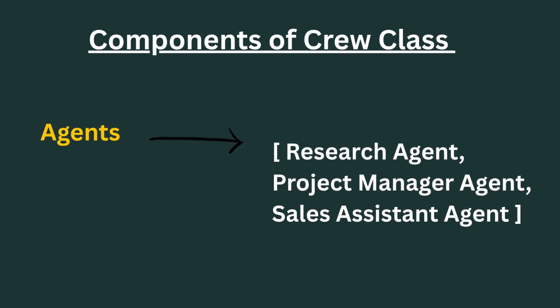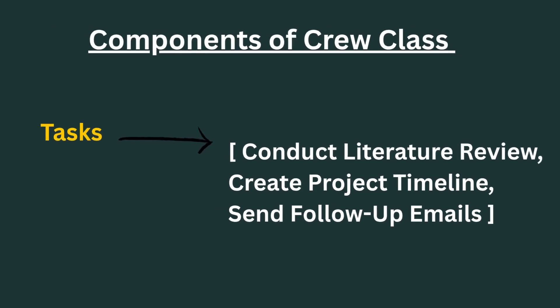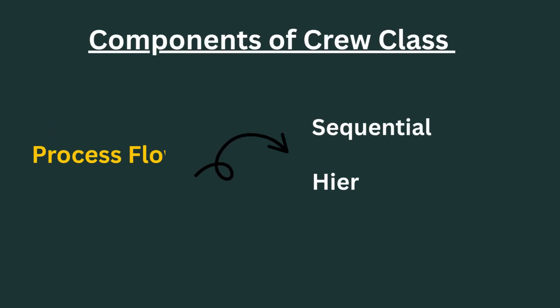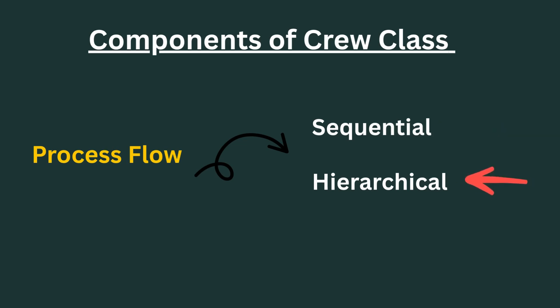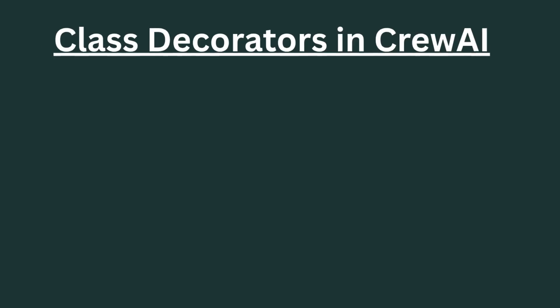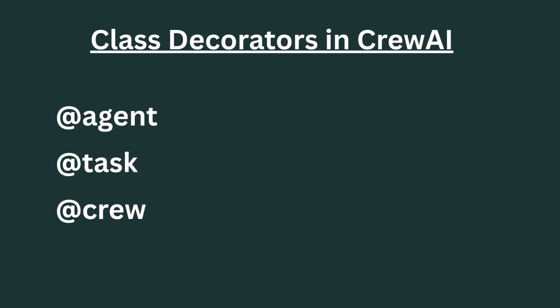In the crew class, agents is the list of agent instances we want to use within our crew. Tasks is where we put all the different tasks used inside our workflow. The process flow determines the execution strategy: sequential means tasks are executed in an orderly progression one after another, while hierarchical means a manager agent coordinates the crew and delegates tasks to each of the agents. We also have different class decorators — the agent, tasks, and crew decorators — which automatically register the components for the workflow.